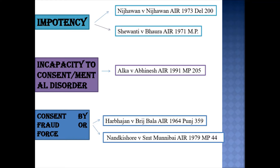Coming to the next ground — incapacity to consent or mental disorder. The Hindu Marriage Act 1955 stipulates that consent should be free for a valid marriage. Incapability to give consent due to insanity or mental disorder will make the marriage voidable, as already discussed under Section 5, clause 2. Mere mental weakness or excessive sentimental nature is not contemplated here. Actual evidence of insanity on a regular or frequent basis can be concluded as insanity, since it is hard to prove someone's mental status, and their daily acts on a regular basis can serve as evidence.